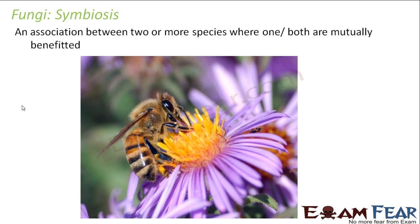What is symbiosis? It is an association between two or more species where one or both are mutually benefited. Here, this insect is sitting on this flower. The flowering plant as well as the insect both are getting benefited because the bees are getting nectar from the flower, but at the same time the bees are helping the flower in pollination. So this kind of association is known as symbiosis.